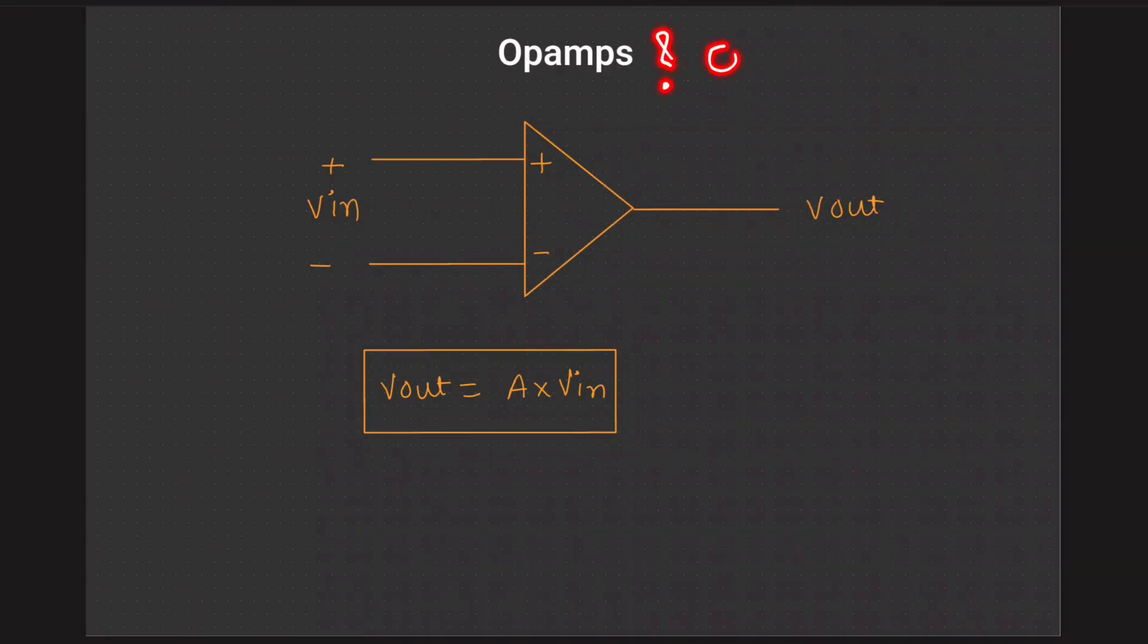What are op-amps? Op-amp is an operational amplifier. It is a type of amplifier.